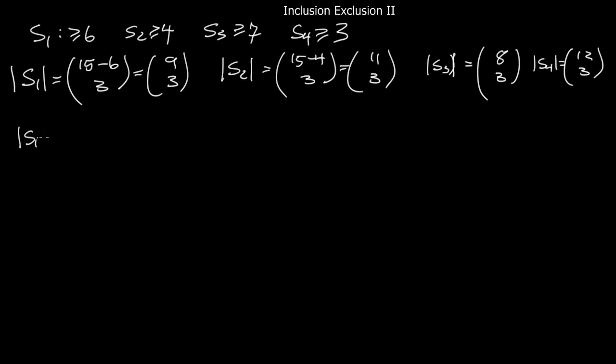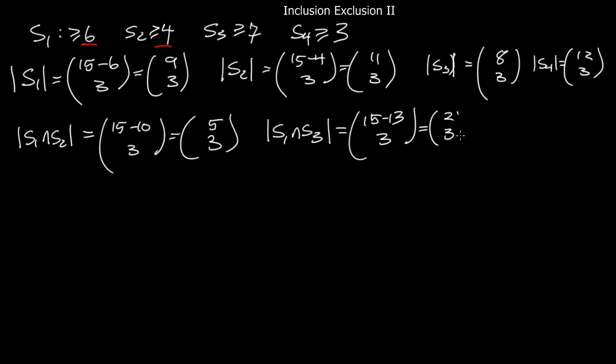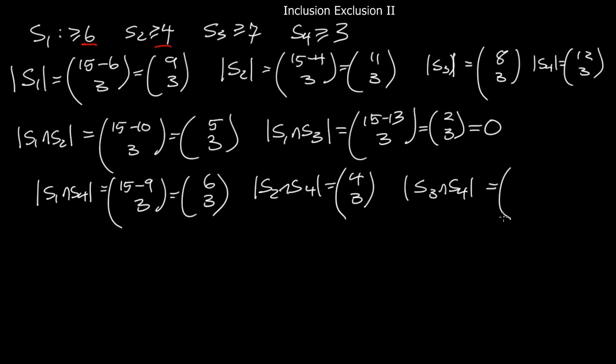Now, I move on to the pairs. What's the order of S1 intersect S2? That's at least 6 in the first box and 4 in the second. So, you put those 10 in. And, you have 15 minus 10, which is to say 5 choose 3. And, similarly, if you do S1 and S3, you put in 13. And, what you get is 2 choose 3, which is 0. And, so on and so forth. S1 intersect S4 is 6 choose 3. And, you compute each of the pairs these ways. Where, in each term, you take 15 minus the sum of the two corresponding numbers. Finally, the S3 and 4 number add up to 10. And, 15 minus 10 is 5. So, that's 5 choose 3.